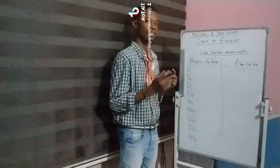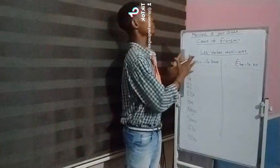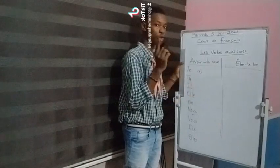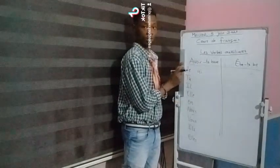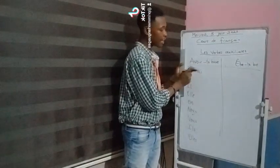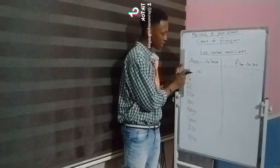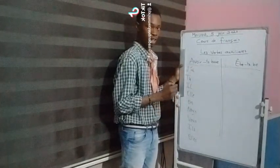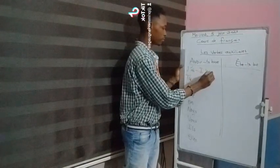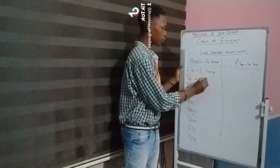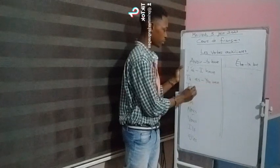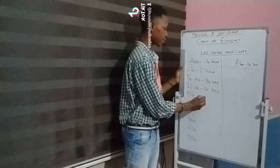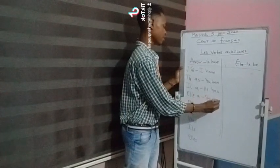Now I'm going to start conjugating these verbs — conjugation is like opening up the verb to see what's inside. For the first person, we have j'ai, which sounds like 'A'. Note that je ends with a vowel and avoir starts with a vowel, so we remove the E and use an apostrophe, making j'ai — I have. Tu as — you have (informal). Il a — he has. Elle a — she has.